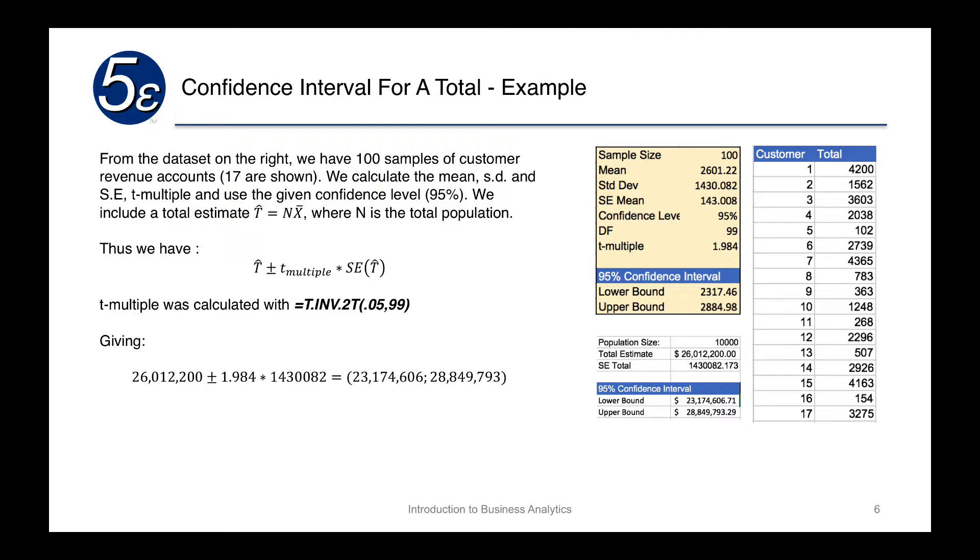So therefore, we have our T hat plus or minus the T multiple times the standard error of that T hat estimate. Again, our T multiple was calculated using the t.inv.2t function for the two tails. We use 0.05 because it's a 95% confidence interval, so we do 1 minus 95% giving us 0.05. We have 100 samples of customer revenue accounts, so therefore we're going to take 1 minus that and get 99.